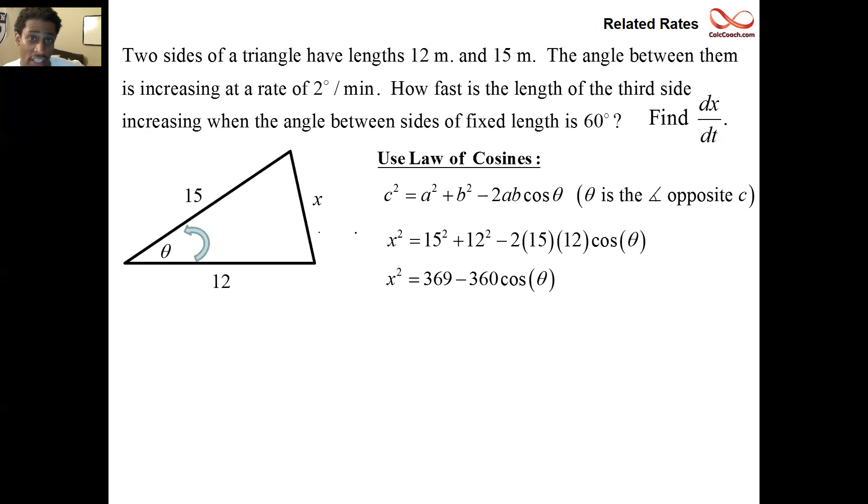Now, we're interested in how this is changing, so we're going to take a derivative, but we're interested in a particular snapshot when theta is exactly 60 degrees. And so, what we're going to do is, in that snapshot, if we have a 15 and a 12 and a π/3 or 60 degrees, we've got to figure out what x is. When we plug into that equation, the 60 degrees, the π/3, has a cosine of 1/2. So 360 gets multiplied by 1/2, you get 180, and then 369 - 180 is 189.